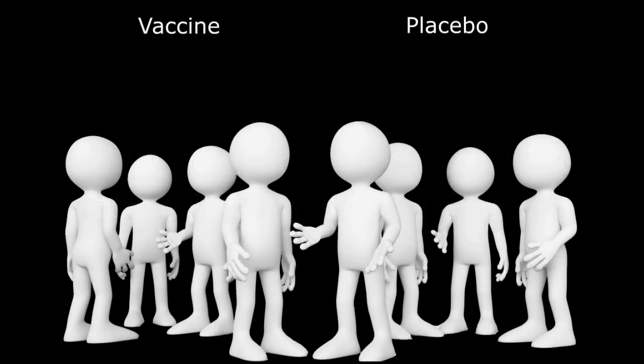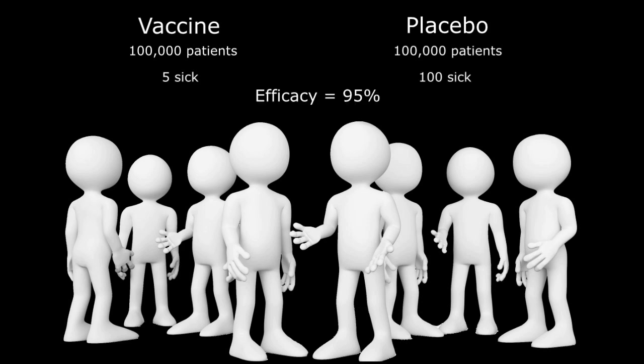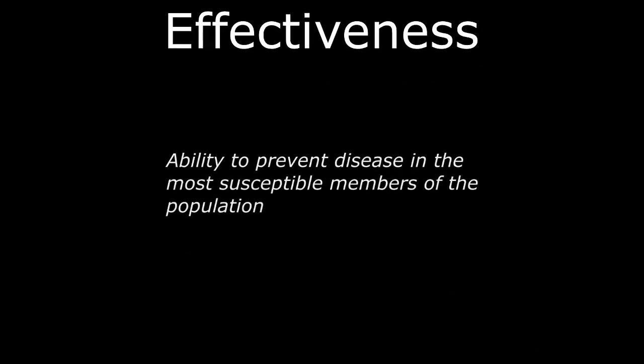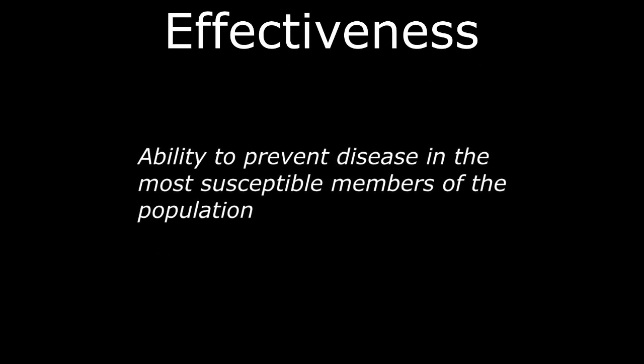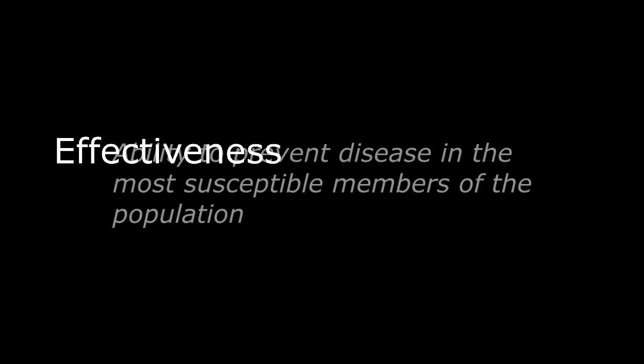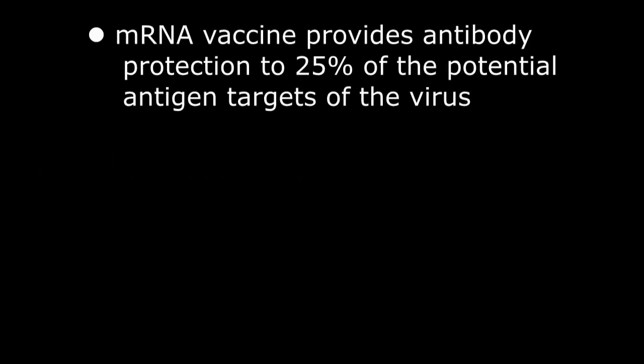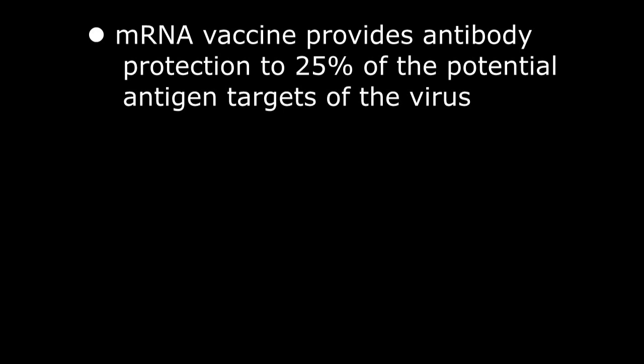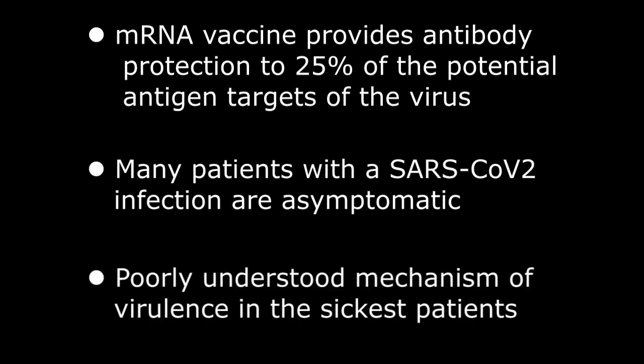That is a statistical analysis based on the number of test individuals in the vaccinated group that developed COVID versus those in the placebo group that developed the same disease. Effectiveness, on the other hand, describes the ability to prevent disease in the most susceptible members of the general population. With the vaccine only providing immunity to one-fourth of the potential antigen targets of the virus, the fact that many patients with a SARS-CoV-2 infection are completely asymptomatic, and the still poorly understood mechanism of virulence in the sickest patients provides a lot of uncertainties.